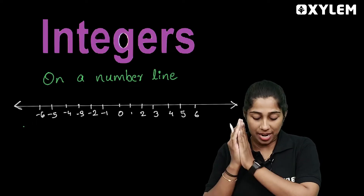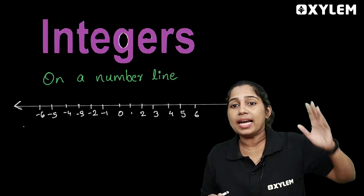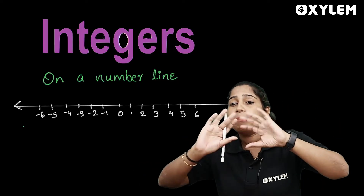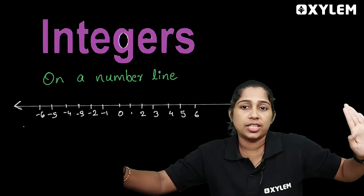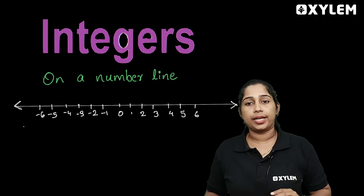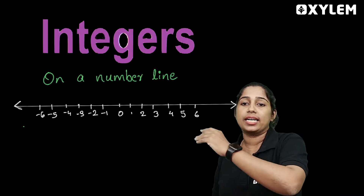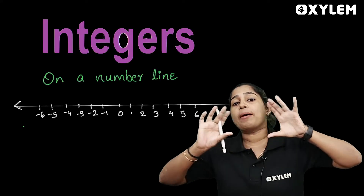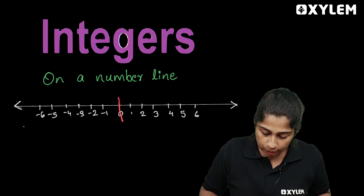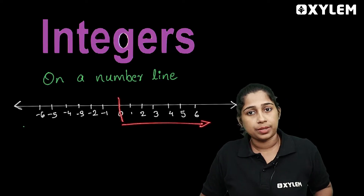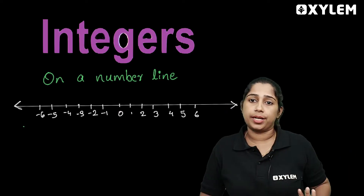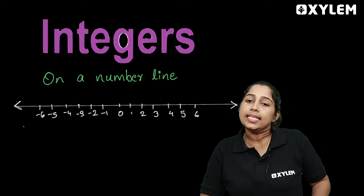Indices on a number line. What is the number line? A simple line. The numbers are arranged on it. In this, we have 0 numbers — that is 0, 1, 2, 3. How do we represent the number line? We have studied the number line. This is the number line.